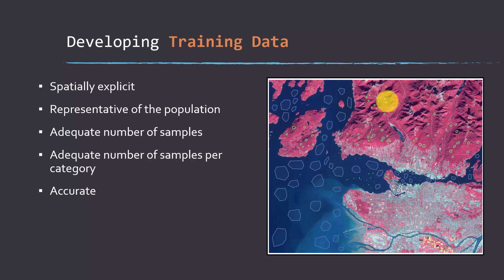Okay, so here's some key characteristics of training data. So because we're dealing with making maps over map space, your training data should be spatially explicit, which means you should know where it occurs. So for example, in this image, this is a Sentinel-2 image over Vancouver and British Columbia, all these polygons represent training samples. So they occur or are over a specific area in the map space.